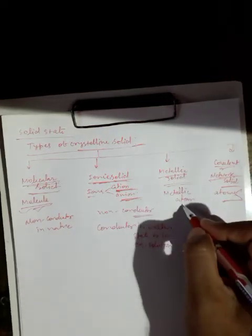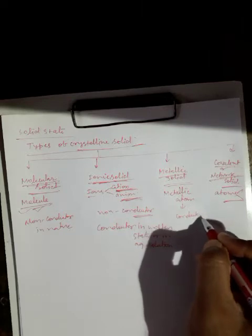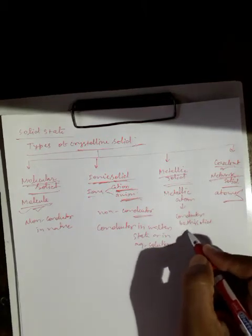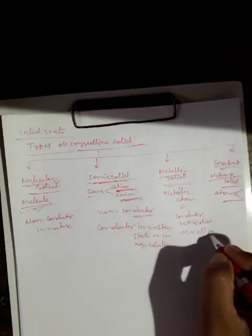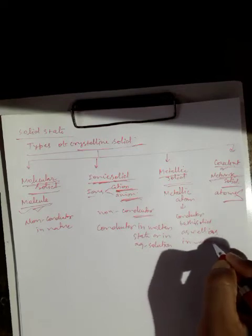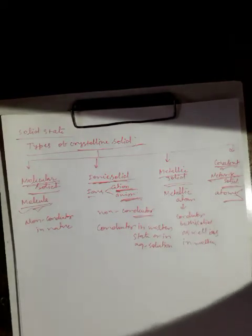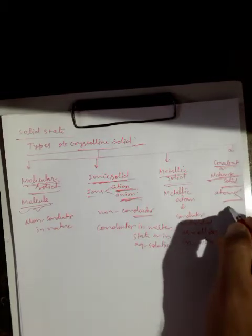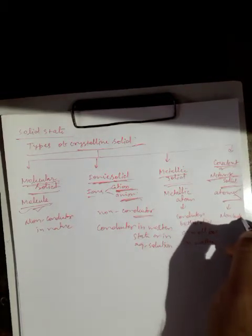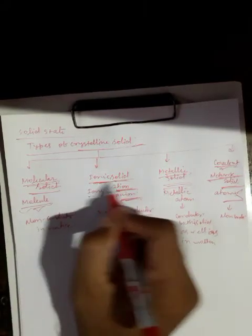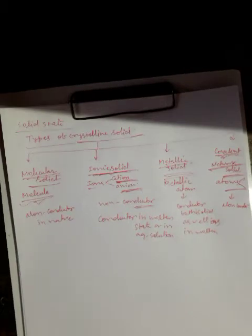Metallic solids are conductors both in solid state as well as in molten state. Covalent solids, in which constituent particle atoms are held together by very strong covalent bonds, are non-conductors. So only metallic solids are conductors in both solid and molten state, while ionic solids conduct only in molten state or aqueous solution.